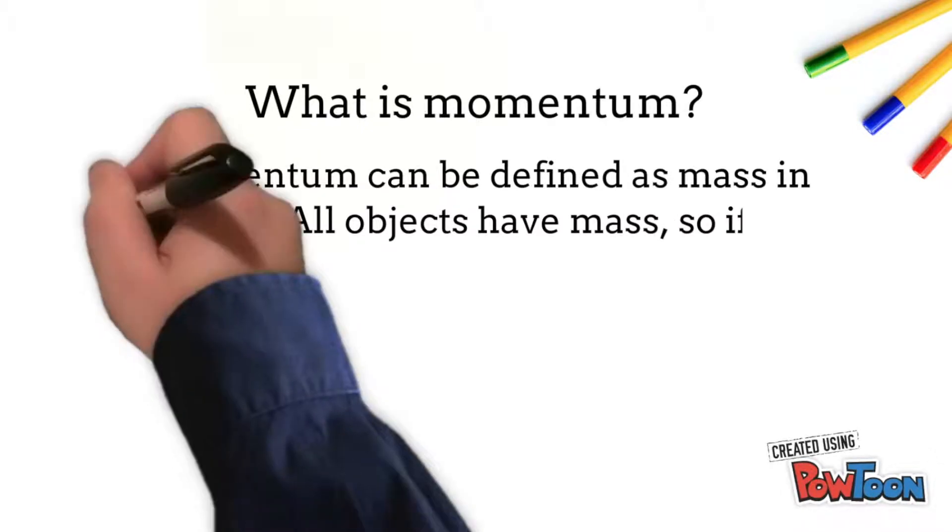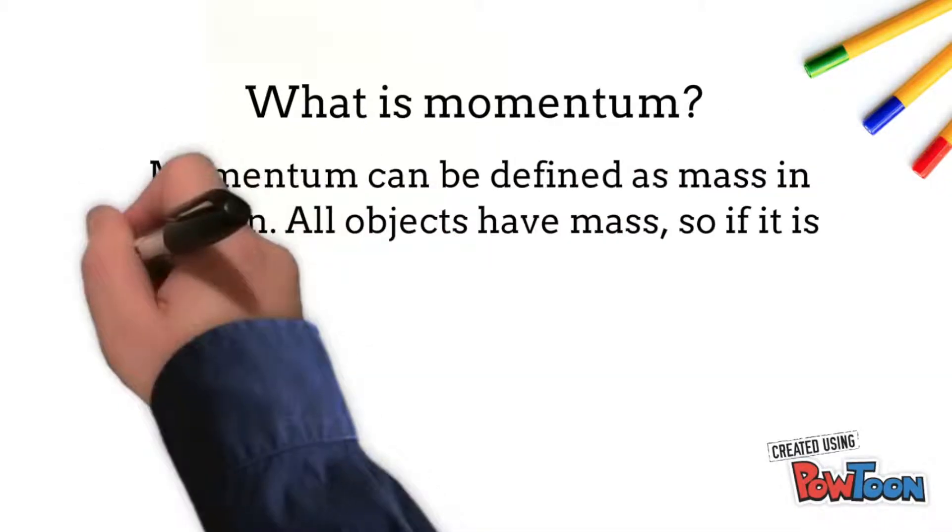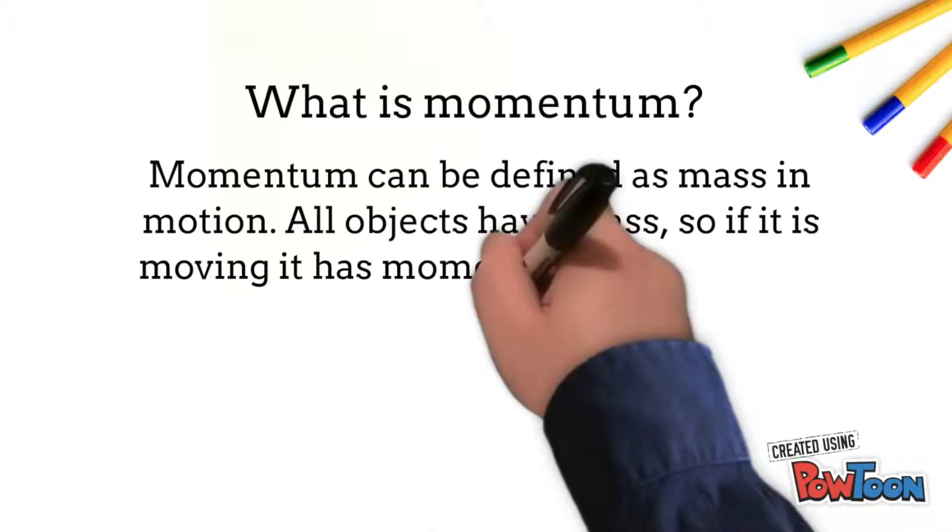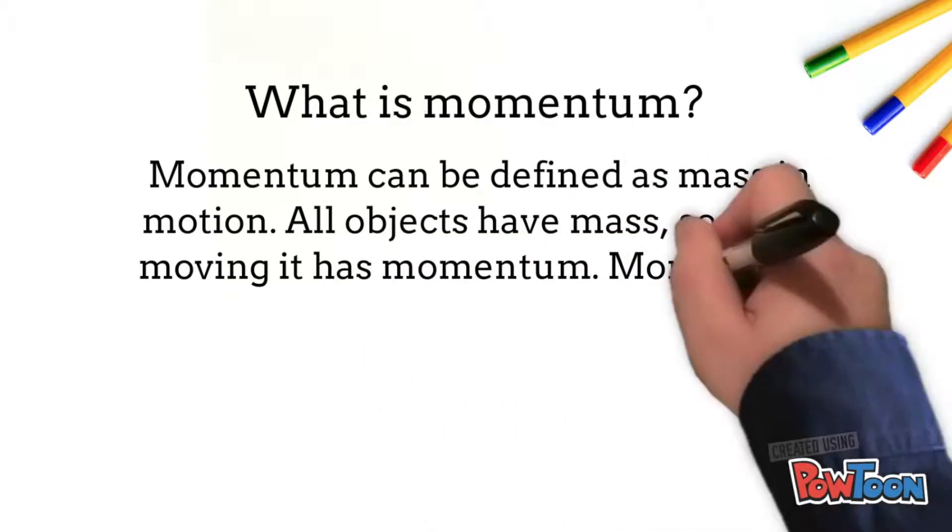The amount of momentum that an object has is dependent upon two variables: how much stuff is moving and how fast the stuff is moving.